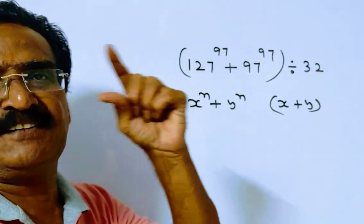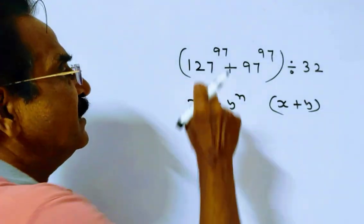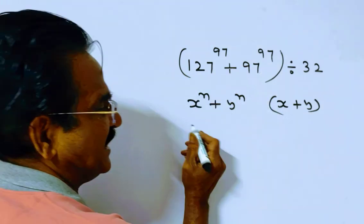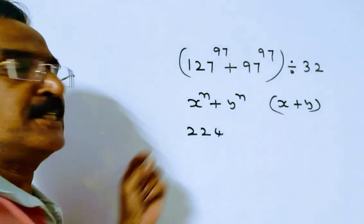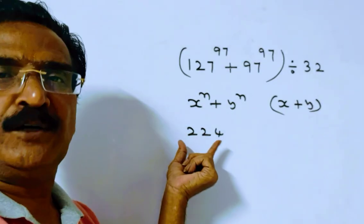So, this expression is divisible by x plus y, that is 127 plus 97, which equals 224. Friends, this expression is divisible by 224.